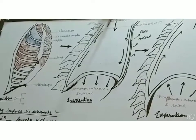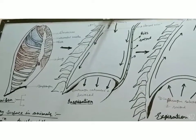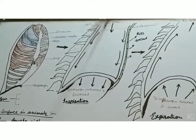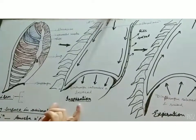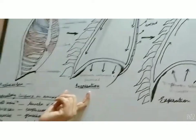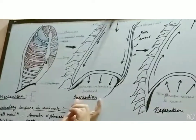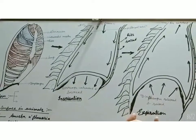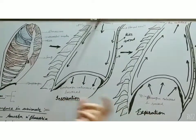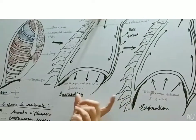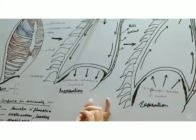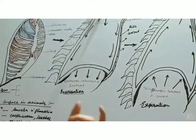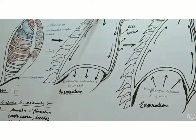Human beings taking oxygen from the atmosphere — that process is called inhalation, and during the mechanism we call it inspiration. This intake of oxygen is inspiration, and releasing out carbon dioxide is called expiration. In between these two steps, the more important step is the exchange of gases, which takes place between the blood and the alveoli.